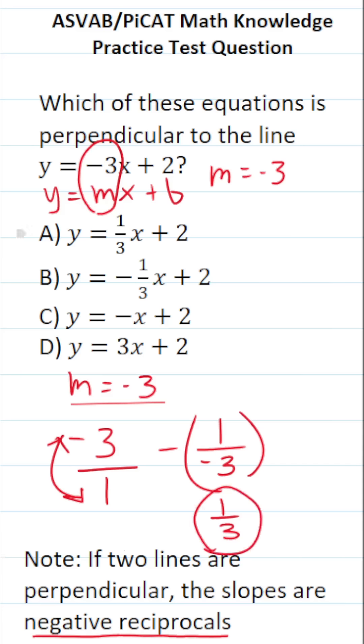So if we look through our answer choices, only one of them has a slope as positive 1 third. So therefore, we know the correct answer in this case is A.